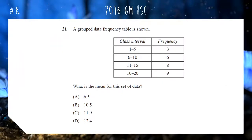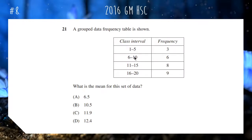Question eight: we have a grouped data frequency table — what is the mean? The key trick is that for a grouped frequency table you need to find the class centers. So the 1–5 class is treated as 3, the next as 8, then 13, 18, and so on. Calculate: 3×3 + 8×6 + 13×8 + 18×9, divide by the total frequency, and you get 12.4. Some people don't know how to handle class intervals — you must find the center and use the class center.